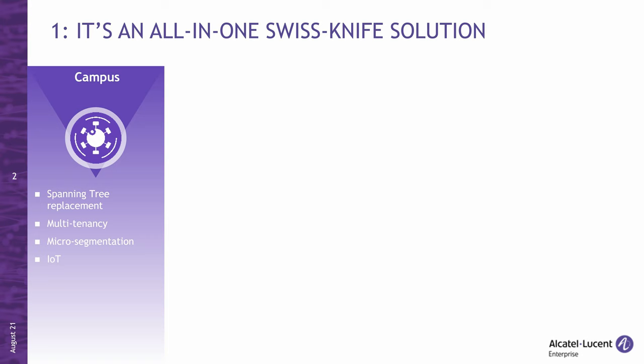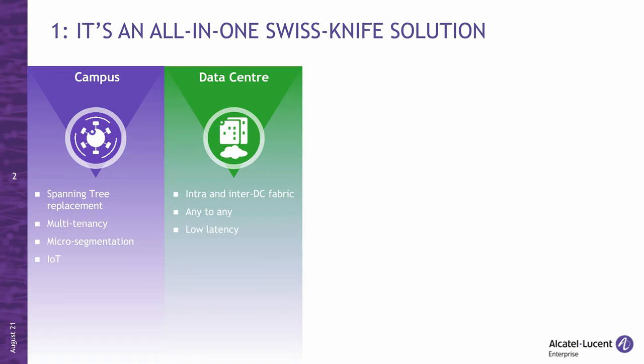But it's not just a replacement for spanning tree. It adds multi-tenancy with both Layer 2 and Layer 3 VPNs, which makes it ideal for micro-segmentation and for IoT in particular. The second area is the data center. You can use SPB to build data center fabrics spanning one or multiple sites, providing any-to-any connectivity over optimal low-latency paths, making it ideal for modern virtualized or private cloud environments.